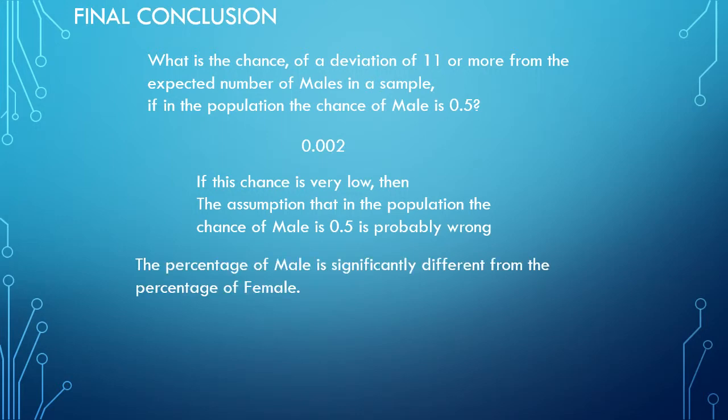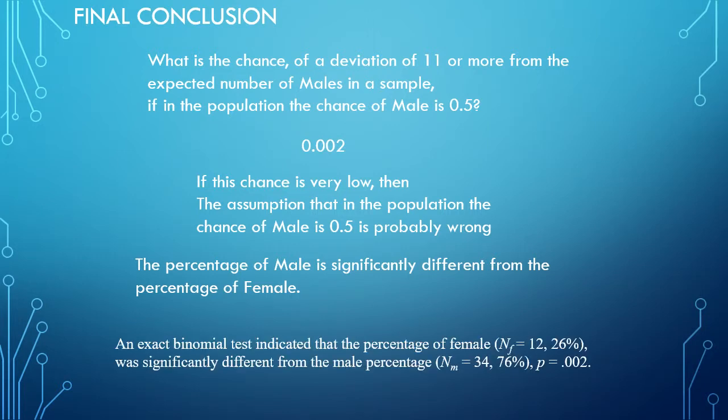The test we actually used here was a binomial test, and we could report that something like this: an exact binomial test indicated that the percentage of female—and it's usually nice to actually include absolute numbers so 12 and a percentage 26%—was significantly different from the male percentage, and then simply the p-value, which is the significance in this case, and that's 0.002.